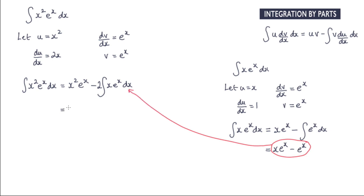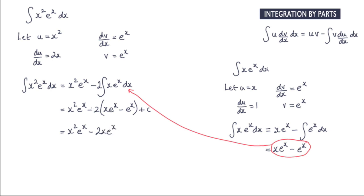We substitute this back in, so what we have is x squared e to the x minus twice the integral result, which is x e to the x minus e to the x, plus the constant of integration. Expanding the bracket, we get x squared e to the x minus 2x e to the x plus 2e to the x plus the constant of integration.